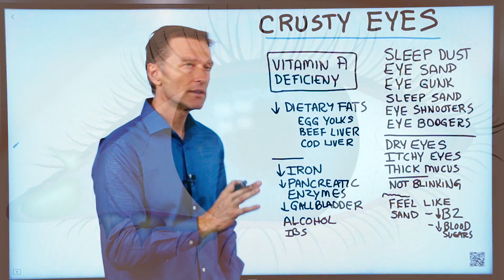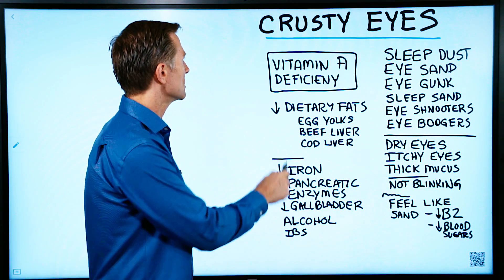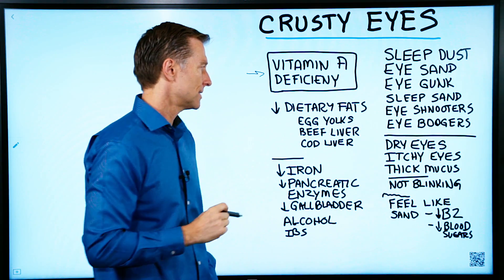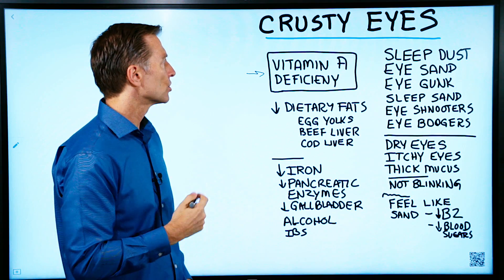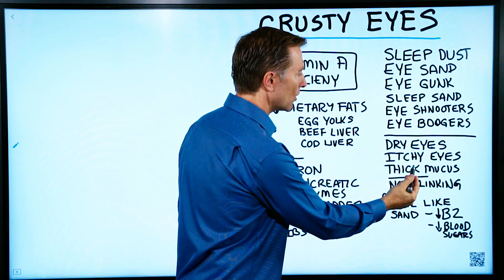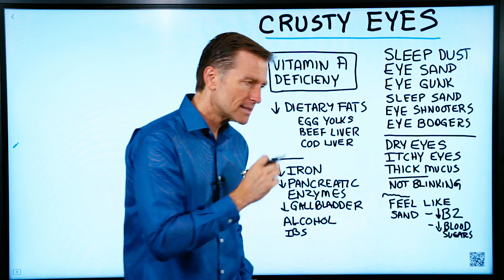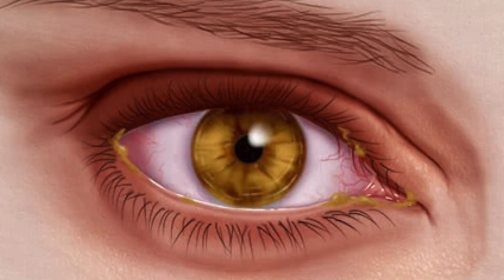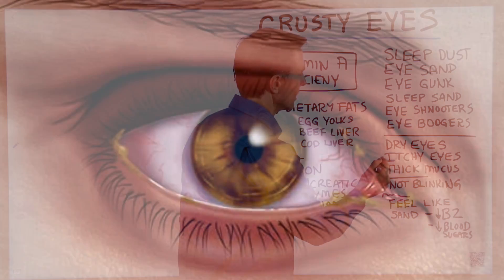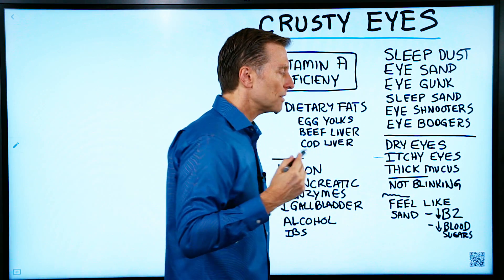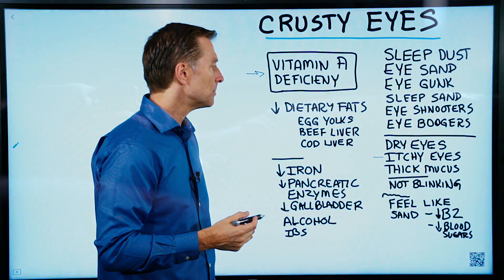The cause of this condition is a low vitamin A situation — a vitamin A deficiency. When you're low in vitamin A, your eyes dry out, but at the same time you get a thickened mucus around the eyes. It can create itchiness. When you're sleeping all night long, you're not blinking.